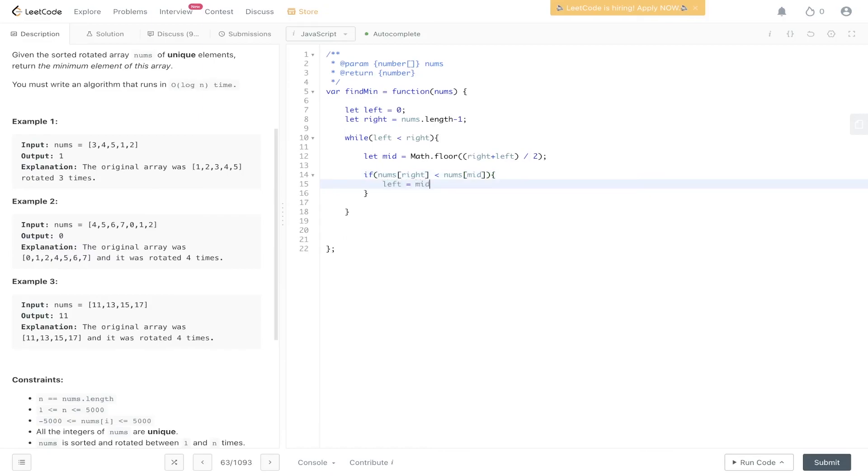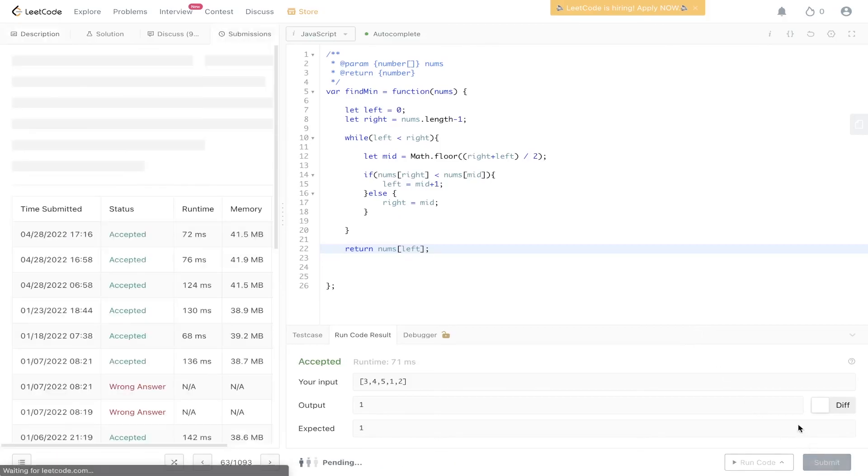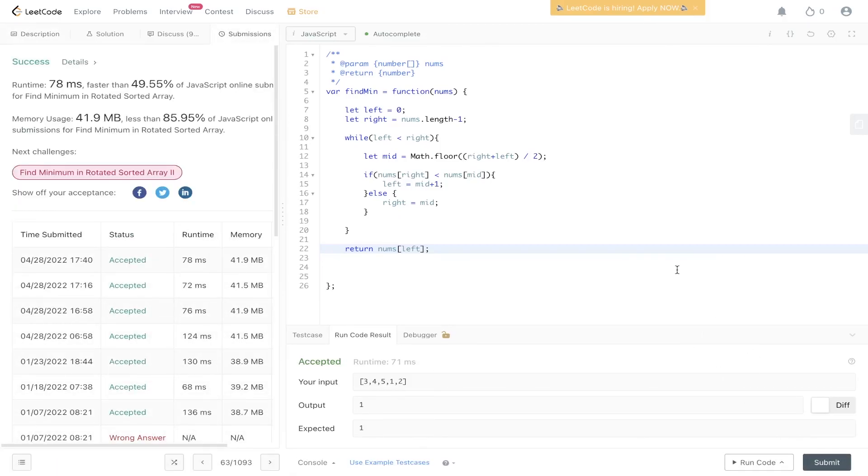Left equals mid plus one. Else, right equals mid. Then we return nums[left]. Let's check if that worked—okay, it's been accepted. Let's submit it, and there you go.